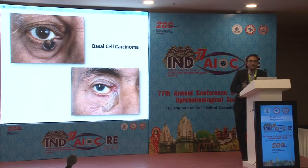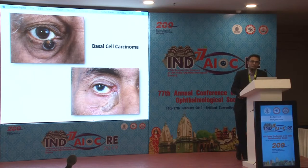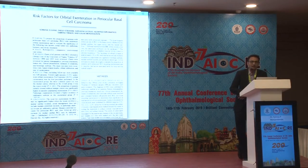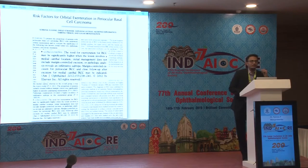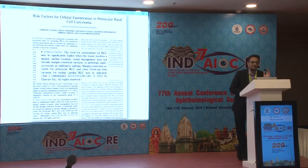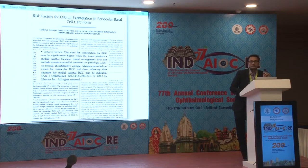For basal cell carcinoma, the most important step is taking four-millimeter margins and getting a frozen section done. With margin control you can remove these tumors. The problem is that basal cell carcinomas requiring orbital exenteration most commonly involve the medial canthal region. This region carries two problems: they metastasize easily and are difficult to reconstruct, so medial canthal BCC needs treatment beyond surgery alone.